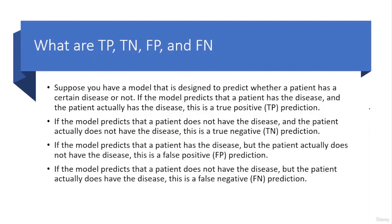TP, TN, FP, and FN are terms used in the context of evaluating the performance of a model. TP means true positive, TN means true negative, FP means false positive, and FN means false negative. These values are used to calculate various metrics such as accuracy, precision, recall, and F1 score, which are used to evaluate the performance of the model.